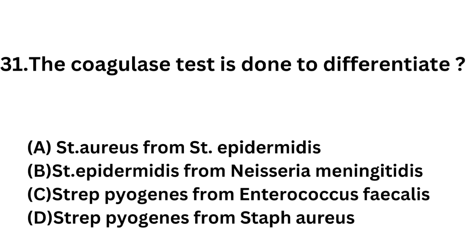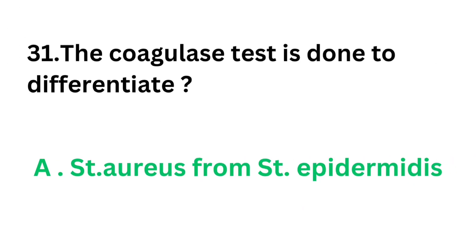Question number 31: The coagulase test is done to differentiate — Option A: Staph aureus from Staph epidermidis. Option B: Staphylococcus epidermidis from Neisseria meningitidis. Option C: Streptococcus pyogenes from Enterococcus fecalis. Option D: Streptococcus pyogenes from Staph aureus. The coagulase test is done to differentiate between Staph aureus and Staph epidermidis. It is a specific test for Staph aureus from Staph epidermidis.